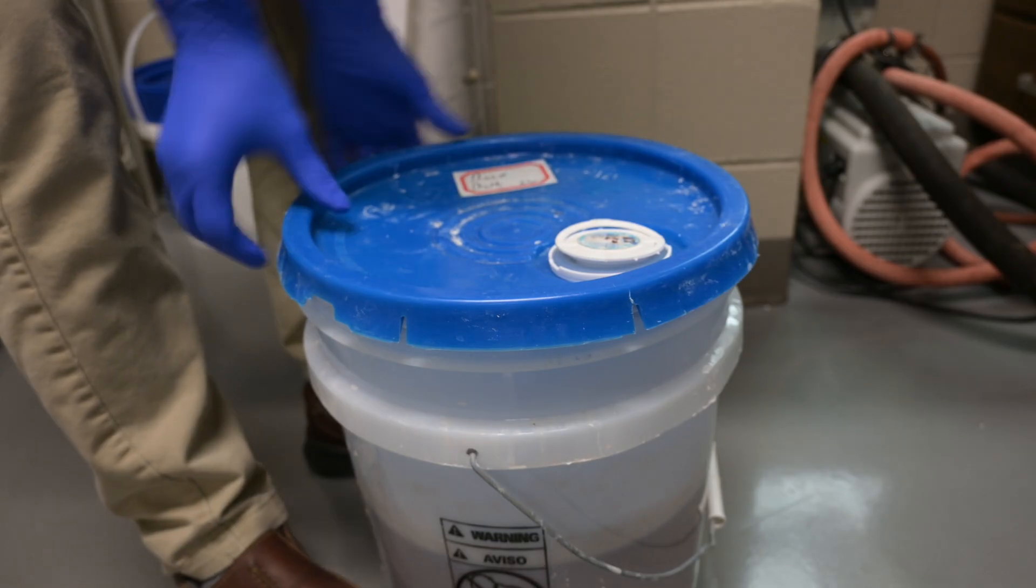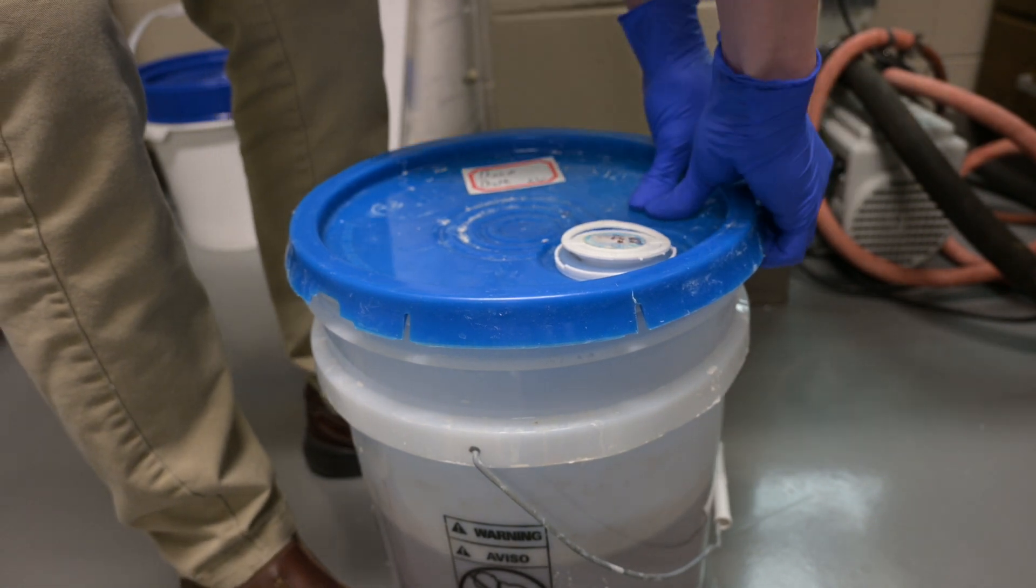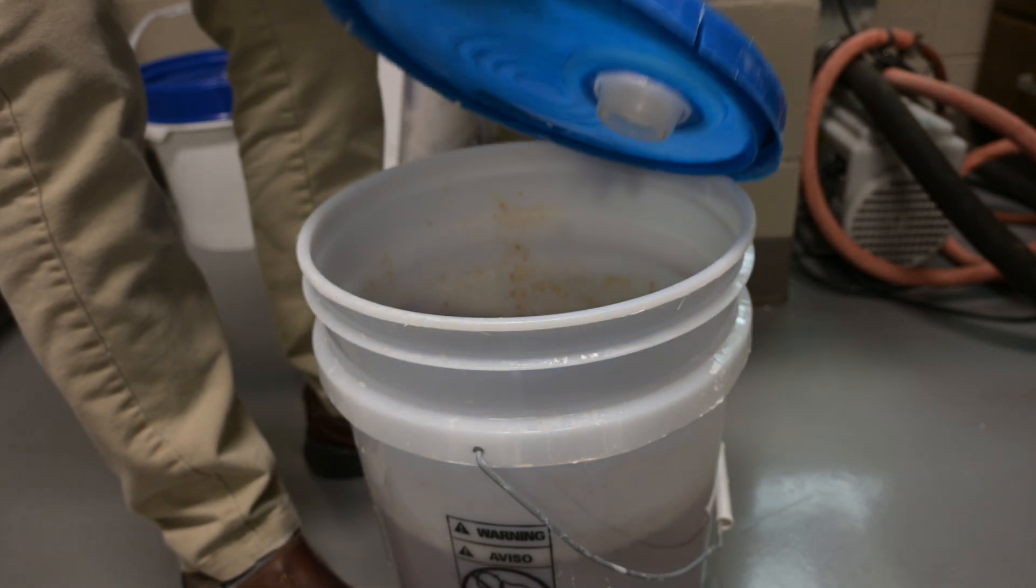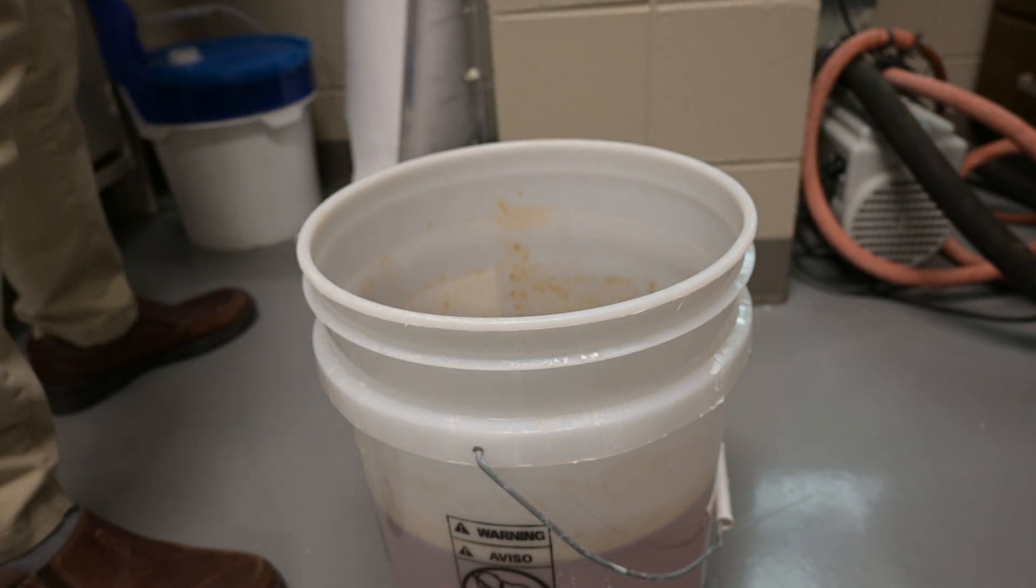For cleanup, I used acetone to rinse out each flask to try to get as much waste out. Next, I placed the glassware into a base bath and soaked them for a few days. Taking them out, we'll have nice clean glassware ready for the next project.